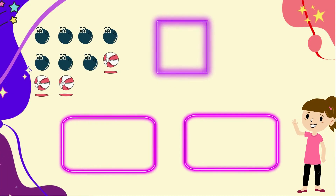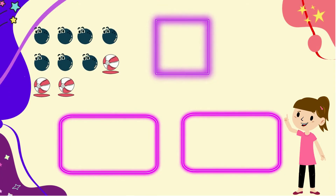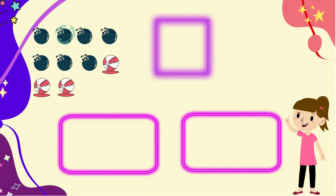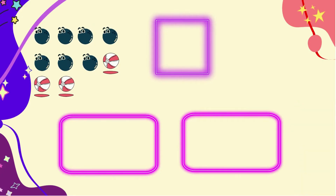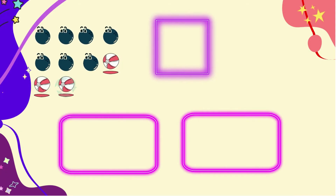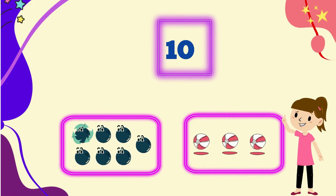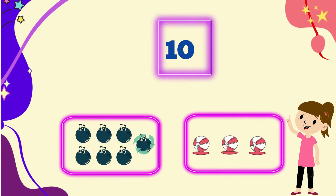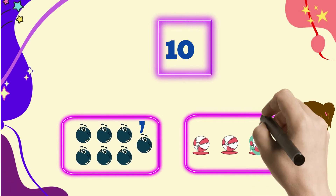Now let's try composing a different number. We have two different kinds of balls here. Let's count how many we have in total. Count with me: one, two, three, four, five, six, seven, eight, nine, and ten. Let's separate them in the boxes below. We have one, two, three, four, five, six, seven balls here and one, two, three orange balls.